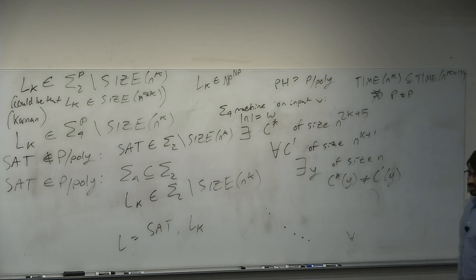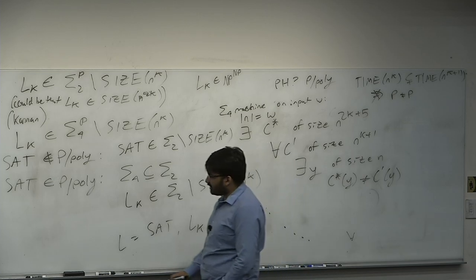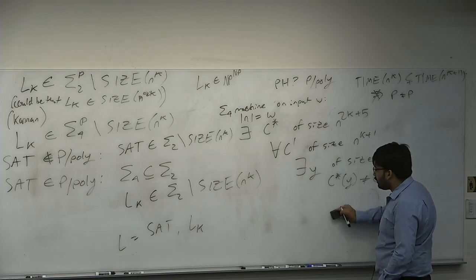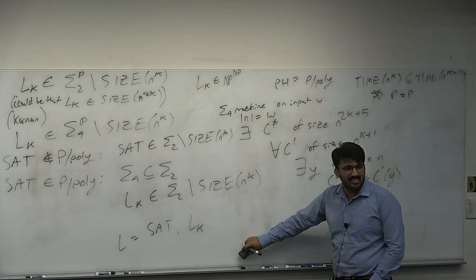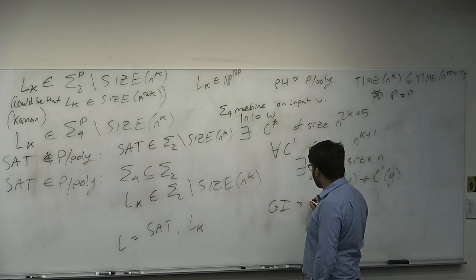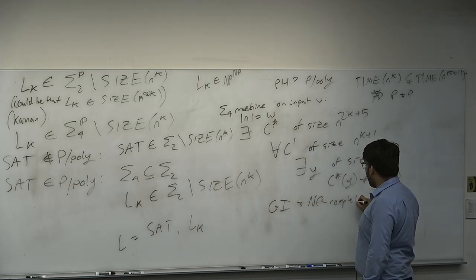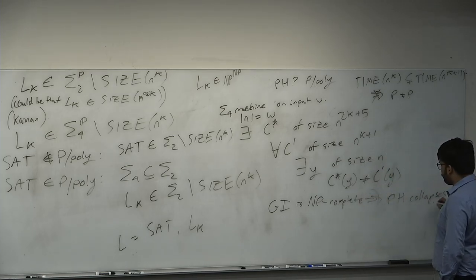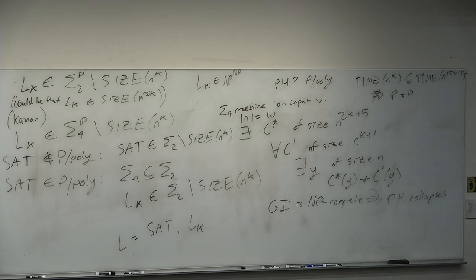Previously I mentioned why graph isomorphism is NP-intermediate and probably not NP-complete. It is known that if graph isomorphism is NP-complete, then PH collapses. We don't think the polynomial hierarchy collapses, so graph isomorphism is probably not NP-complete.